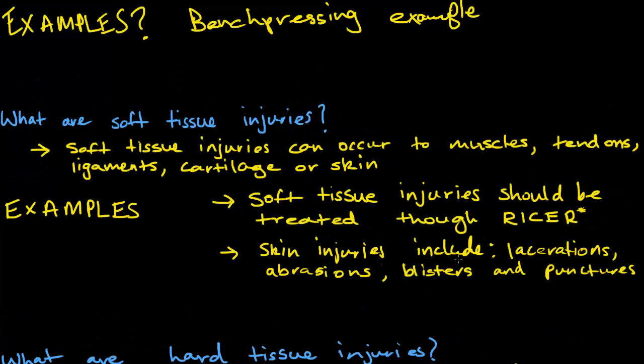Now I'll talk about soft tissue injuries. Soft tissue injuries are injuries which can occur to muscles, tendons, ligaments, cartilage, or skin. Soft tissue injuries should be treated through RISA — I have a note next to RISA because I'll be talking more about it later on. I just want to introduce you to the acronym now. For every single soft tissue injury, we use the RISA approach, which is a methodological approach for treating soft tissue injuries.